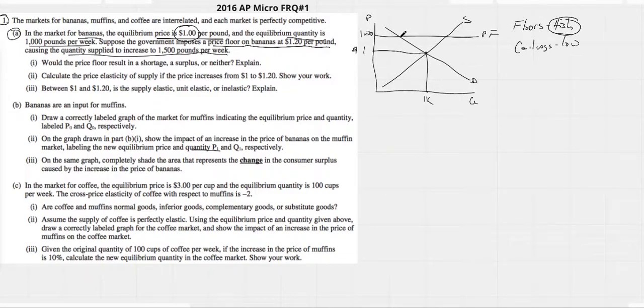We do have a quantity demand and the quantity supplied, and they tell us what the quantity supply increases to 1,500.